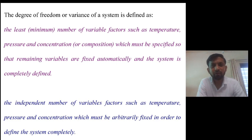The degree of freedom is defined as the least number of variable factors such as temperature, pressure and concentration which must be specified. Why is it specified? So that remaining variables are fixed automatically. No need to define that. It is fixed automatically and the system is completely defined.